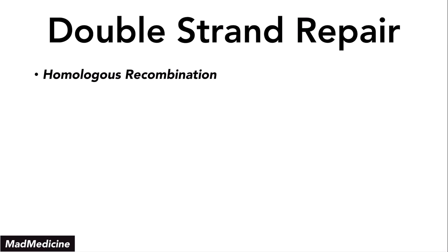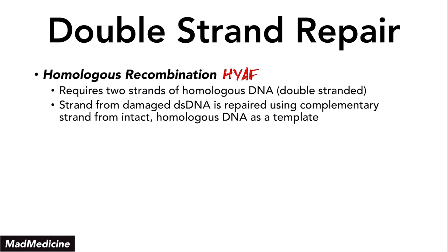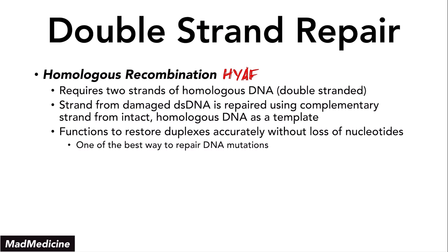Finally, we have homologous recombination — this is very important, so pay attention. This is high yield. In homologous recombination, you're going to need two strands of homologous double-stranded DNA. What happens is that you take the strand from the damaged DNA and repair it using the complementary strand from the intact or homologous DNA as a template. You take that template to create the perfect copy and repair the DNA, then ligate it back in place. This functions to restore duplexes accurately without loss of nucleotides — it's one of the best ways we can repair DNA mutations without loss.